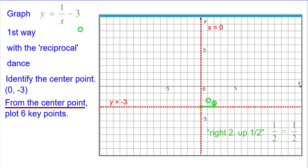Right 2 up 1 half. The reciprocal of 2 is 1 half. And right 1 half up 2 because the reciprocal of 1 half is 2.